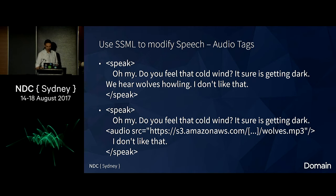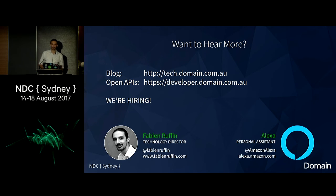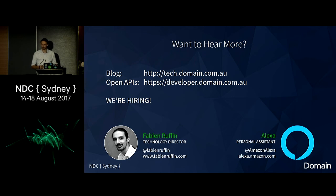Check it out — it's a very good game. That's all we've got time for today. If you want to hear more about Alexa, there's a session this afternoon in Room 7 by Heather Downing about how to build those APIs — more on the code side. If you want to see more cool things built at Domain, go to tech.domain.com.au. If you're interested in the APIs used to build the skill, head to developer.domain.com.au — we've just made those APIs public a couple of weeks ago. We're also hiring: front-end, back-end, mobile — get in touch on LinkedIn or after the talk. Thank you.